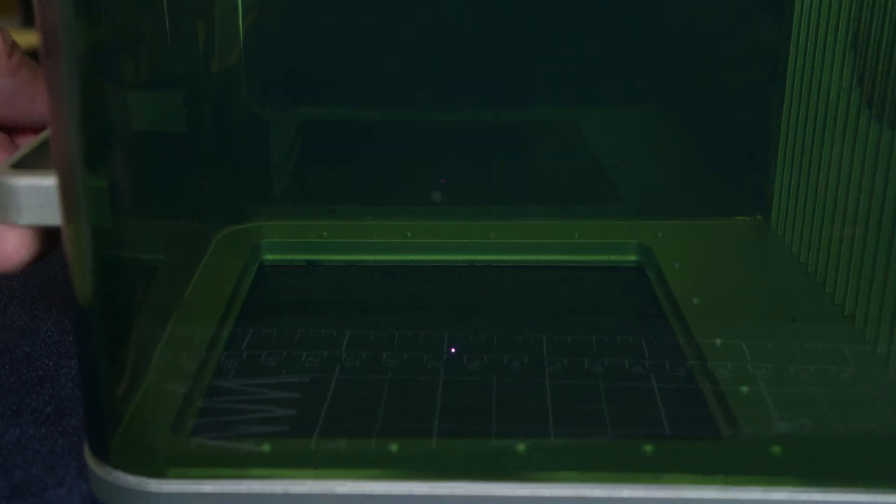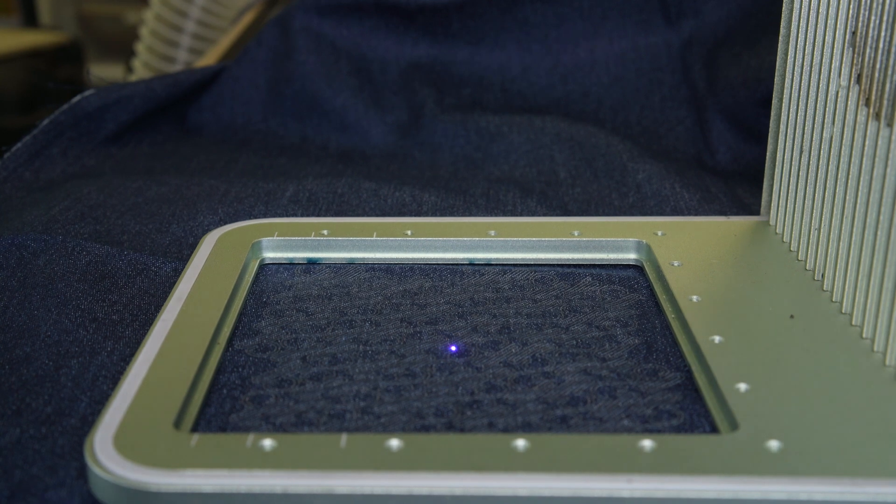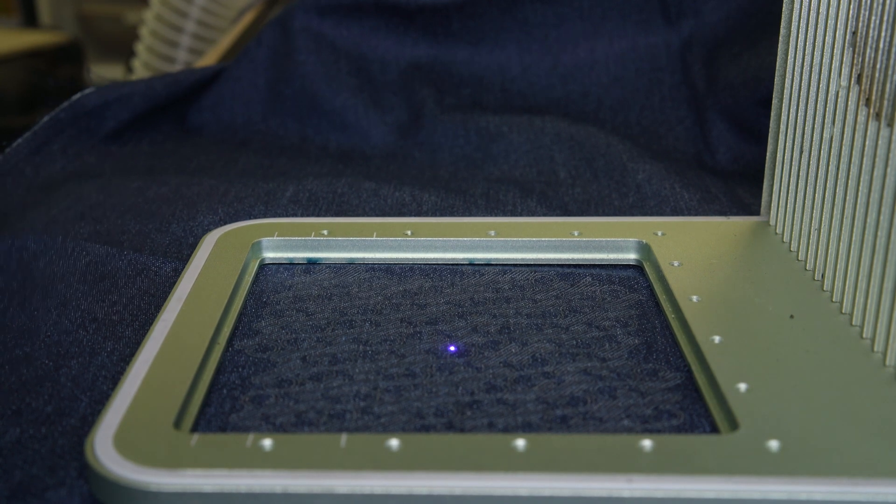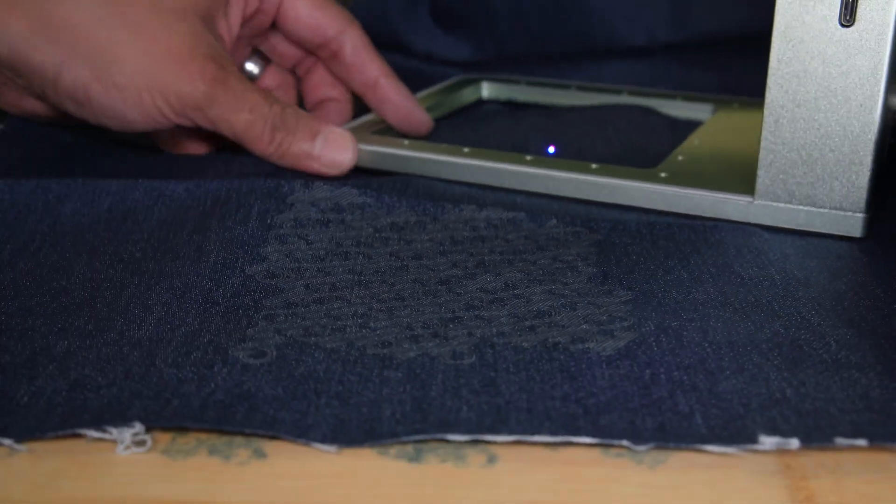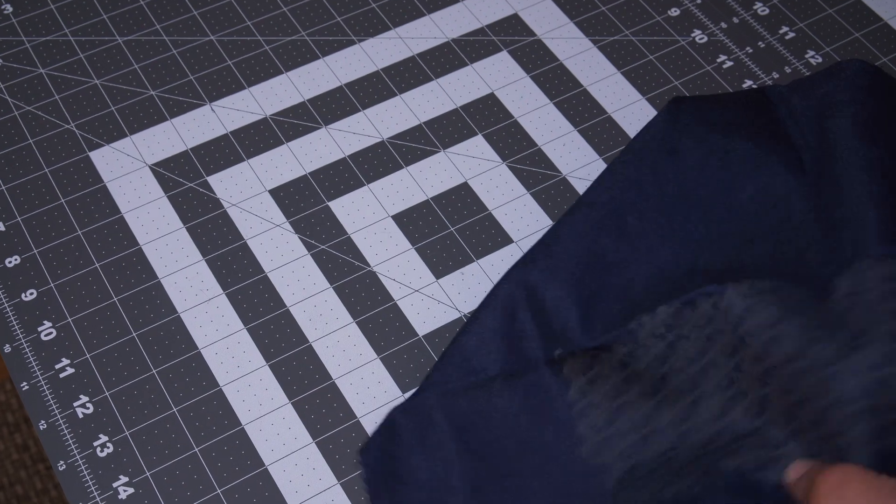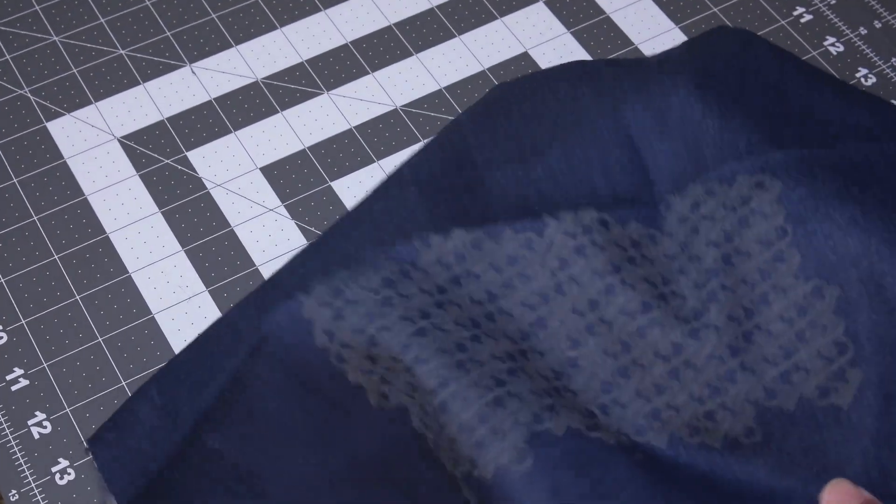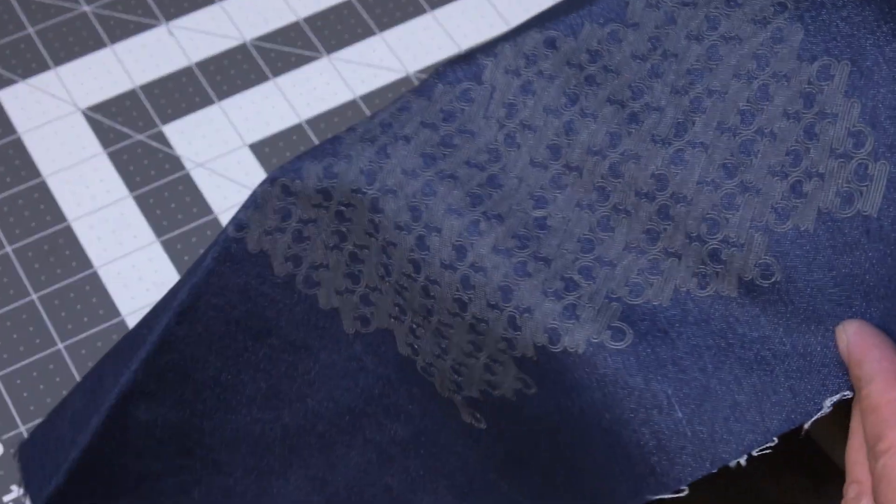We discovered very quickly that it's best to design a pattern that has a lot of forgiving negative space, and to avoid any linear elements that would require any degree of precise alignment. The more flexible the material, the more difficult it is to accurately align multiple passes with the laser engraver.